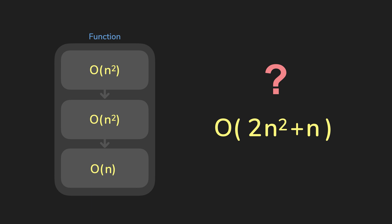But this function is actually just O of N squared. Because first, we drop the constant and the coefficients. Then we only choose the highest order and drop the rest. So it's just an O of N squared.